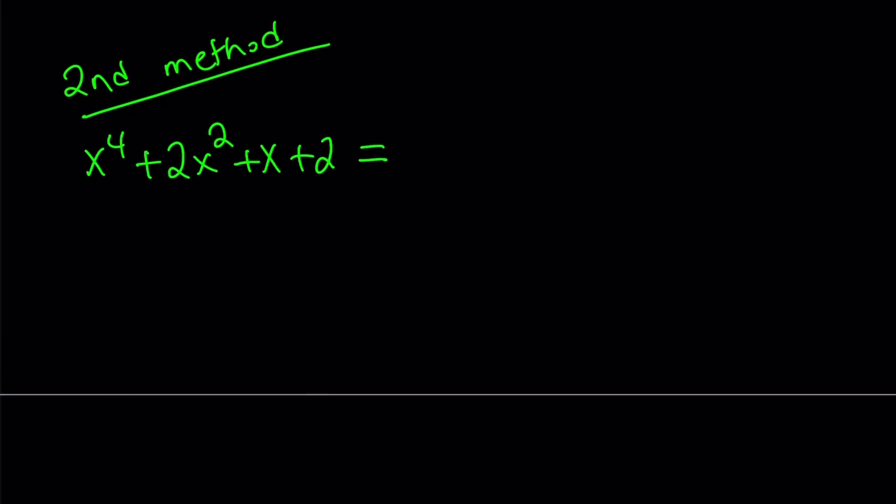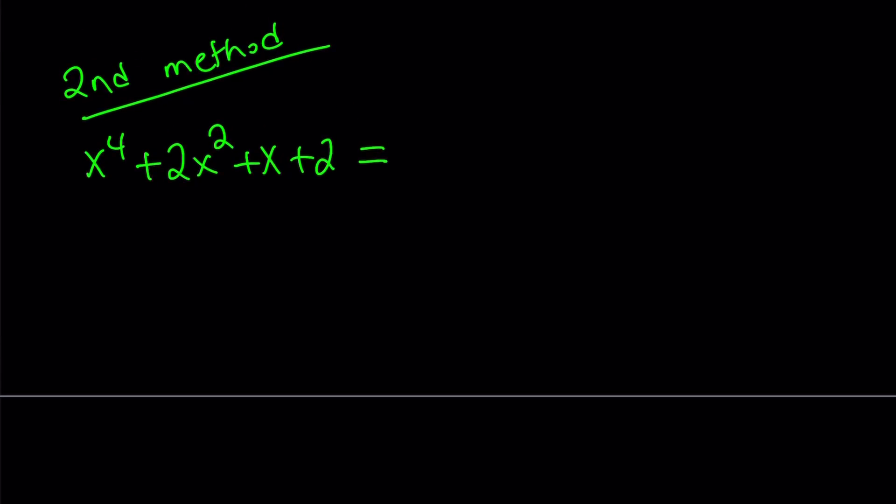I can assume that there's going to be two quadratic factors. Why can I assume that? Can't there be a linear and a cubic factor? That's not possible because we noticed that there are no rational solutions. So, we can't really have a linear factor, at least with integer coefficients.